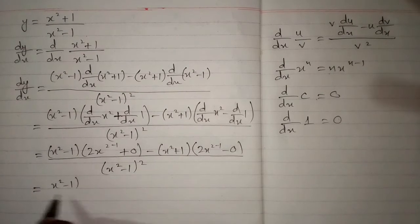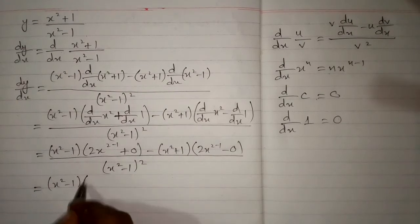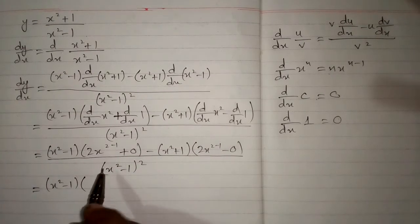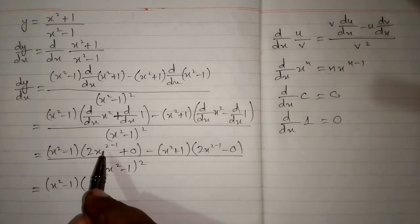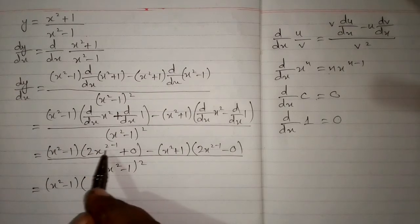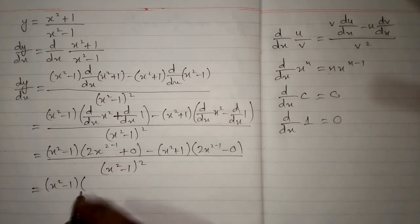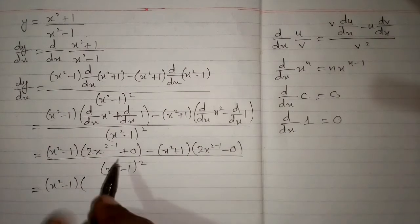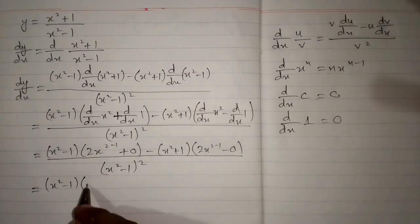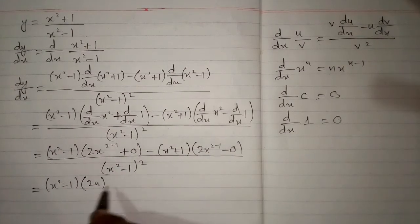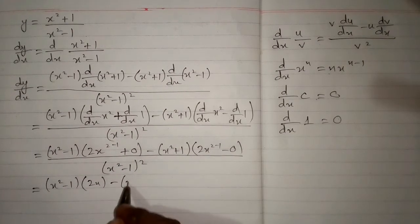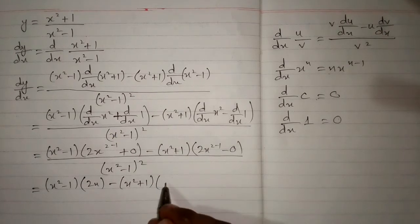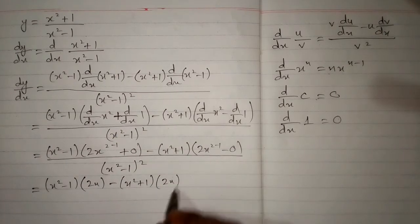Now x square minus 1. Then x to the power 2 minus 1 is x to the power 1, so we write 2x plus 0, and 2x plus 0 is 2x. And again we have 2x.